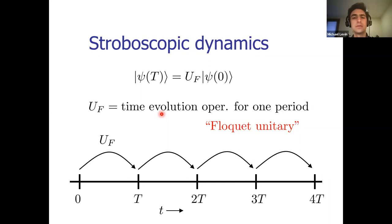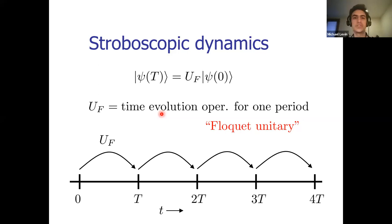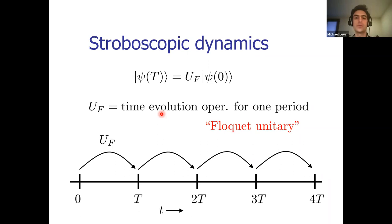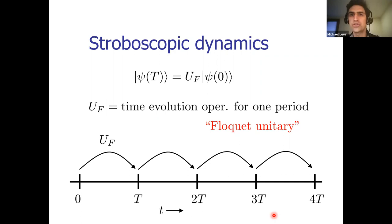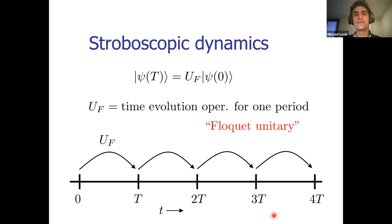The quasi-energies are only defined modulo 2π/T — similar to how crystal momentum is defined modulo 2π over the lattice spacing in a crystal. People sometimes call it an energy Brillouin zone. We can then plot the quasi-energy dispersion relation as a function of crystal momentum k_x along the edge, just as we'd plot energy vs. momentum for a Hamiltonian. I'm currently looking at coherent unitary dynamics without any measurement.